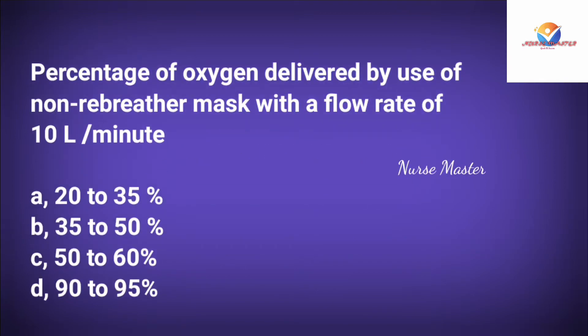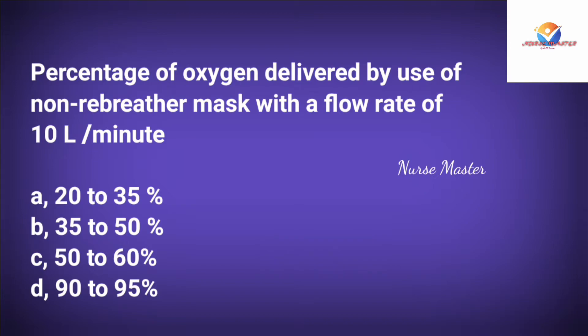Question: What is the percentage of oxygen delivered by a non-rebreather mask with a flow rate of 10 liters per minute? Option A: 20–35%. Option B: 35–50%. Option C: 50–60%. Option D: 90–95%.